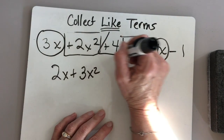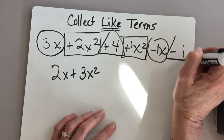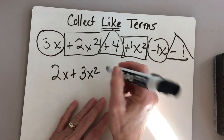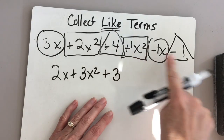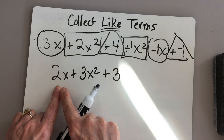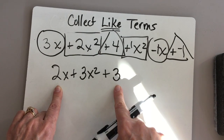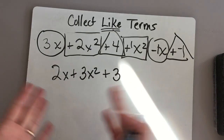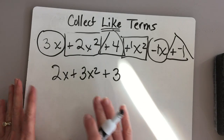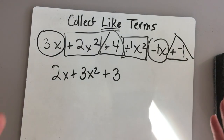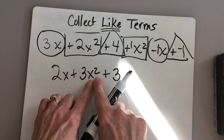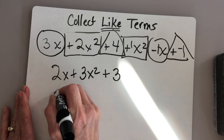Now we have one more term: the 4 here and the negative 1 here. 4 minus 1 is 3 — positive 3; 4 plus a negative 1 is still positive 3. Notice that we have three different terms here — this is a trinomial. It cannot be simplified anymore; that is in its simplest form. The only thing we could do to be more proper is to rearrange the terms so the one with the biggest exponent goes first.